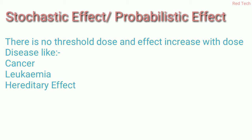Hereditary effect means that if a person is affected by the stochastic effect, their upcoming generations may have some faults or hereditary problems. These hereditary problems may arise in future generations.